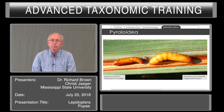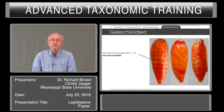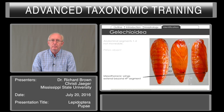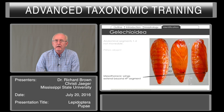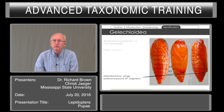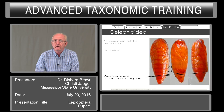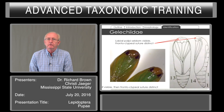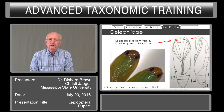Gelechioidea: segments one to four are fused and not movable. They don't have pilifers, and the mesothoracic wings extend beyond the fourth segment. All of these characteristics will give you an indication that you may have a Gelechioid, but there are exceptions and there are families that can be misleading. Gelechioids have labial palpi seldom visible, and the frontoclypeal suture is distinct — so these two characters can separate out the Gelechioidea from many of the other families.